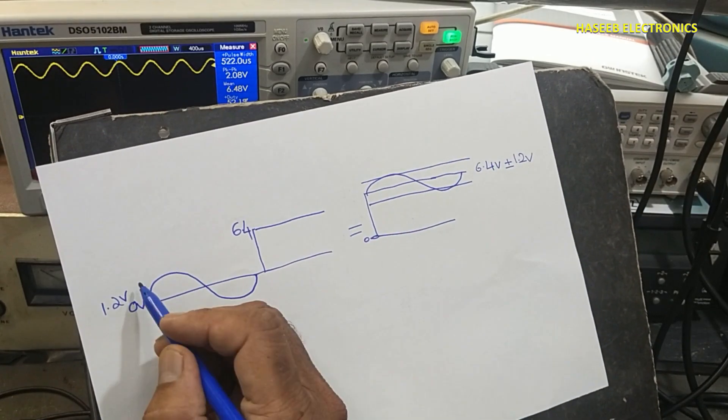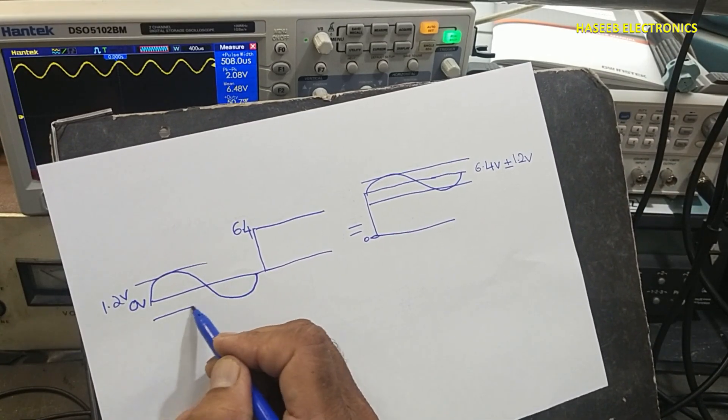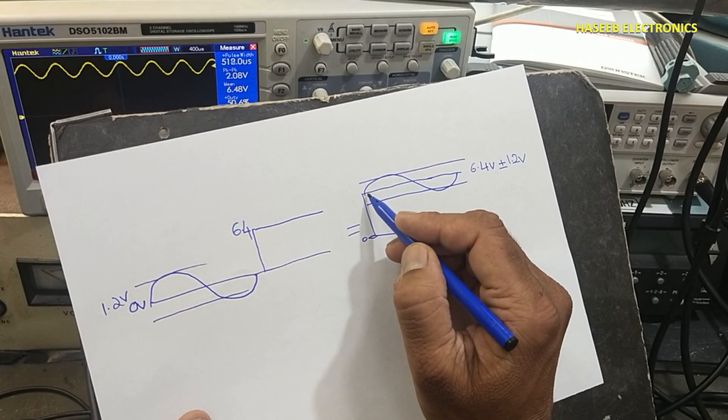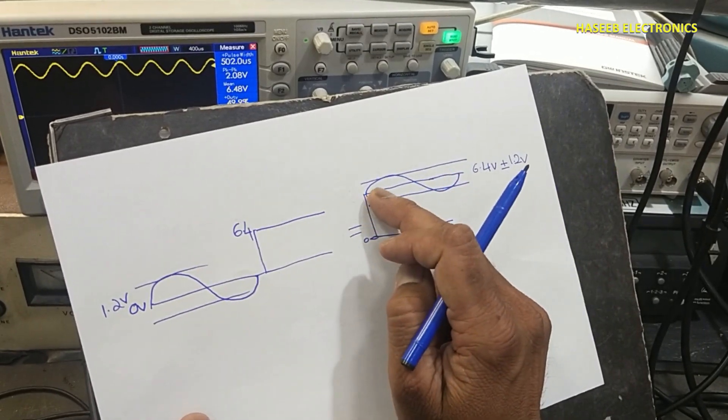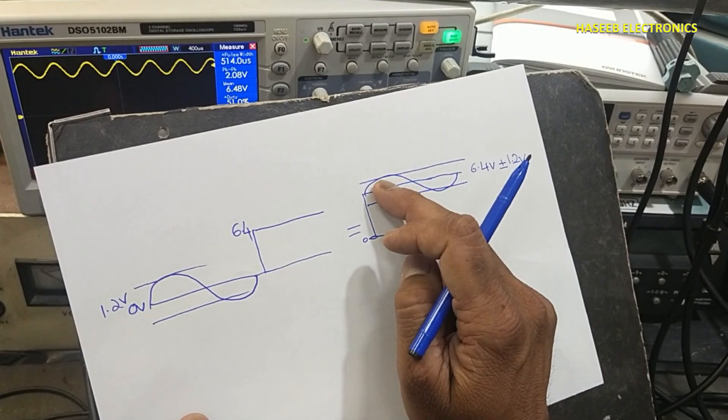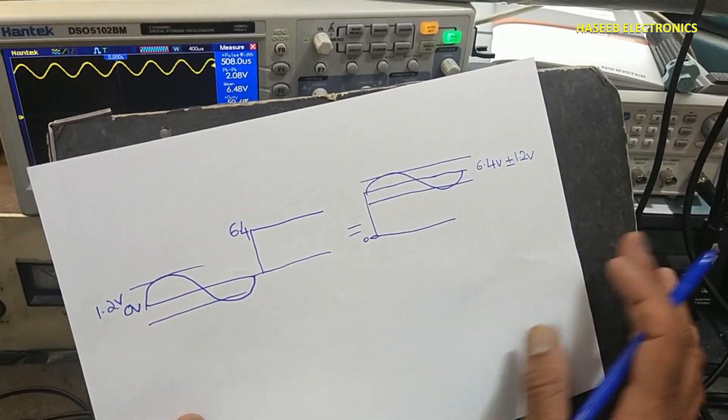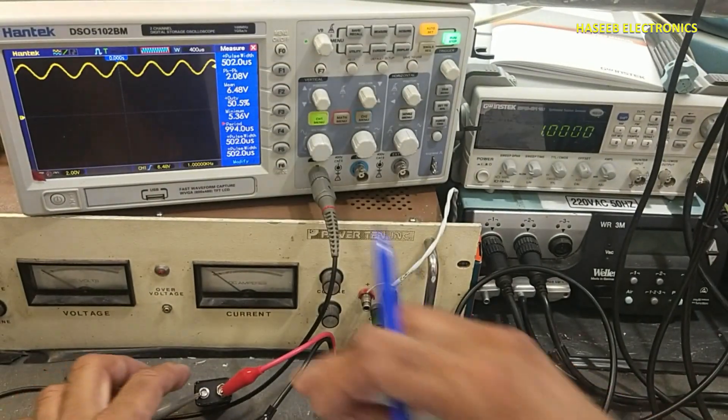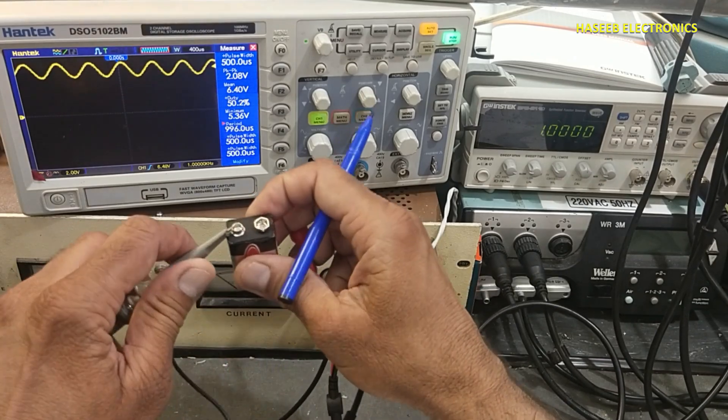The same AC signal peak to peak, this peak to peak is being added or subtracted from this DC level. It is now with positive offset. And if we reverse the polarity...